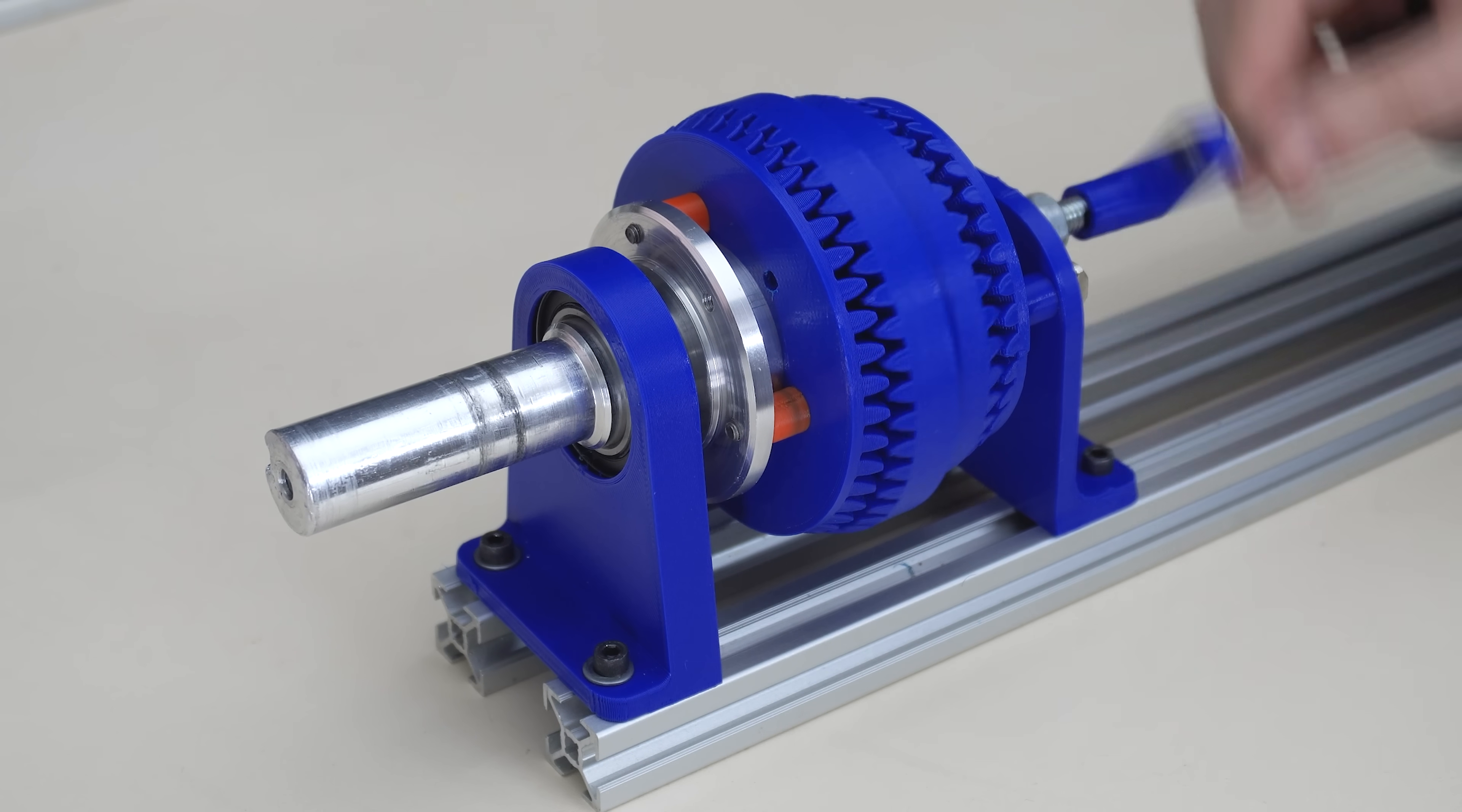All right, this is the one with a 409 gear ratio. Let's turn it. Is it working? I can't tell it's moving. It's really slow. And for just one full rotation of the output shaft, I would need to turn this handle 409 times. How slow it's turning.